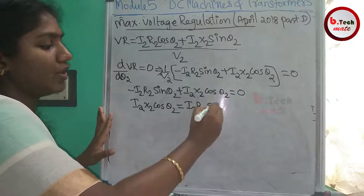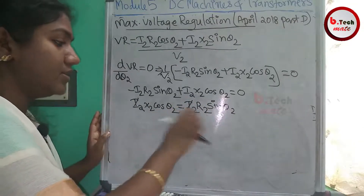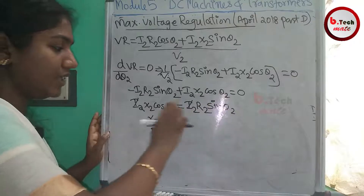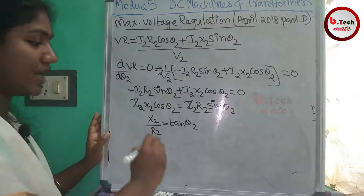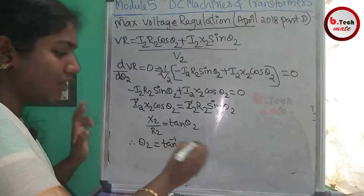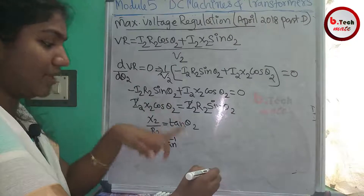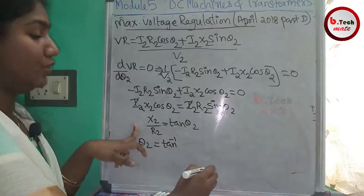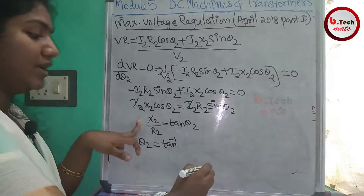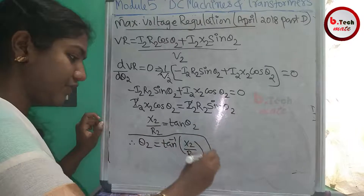Rearranging: I₂X₂ cosθ₂ equals I₂R₂ sinθ₂. Dividing both sides: sinθ₂ over cosθ₂ equals X₂ over R₂, so tanθ₂ equals X₂/R₂. Taking tan inverse: θ₂ equals tan⁻¹(X₂/R₂). This is the condition for maximum voltage regulation.